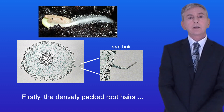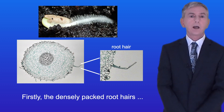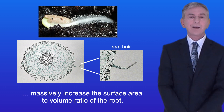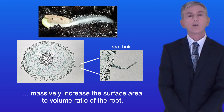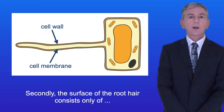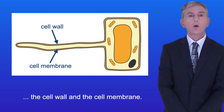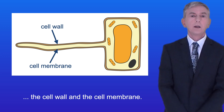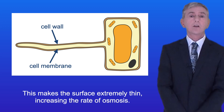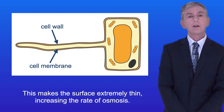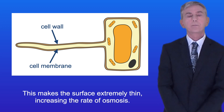Firstly, the densely packed root hairs massively increase the surface area to volume ratio of the root. Secondly, the surface of the root hair consists only of the cell wall and the cell membrane. This makes the surface extremely thin, increasing the rate of osmosis.